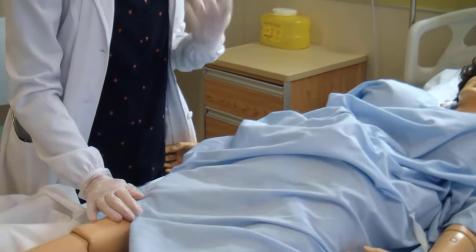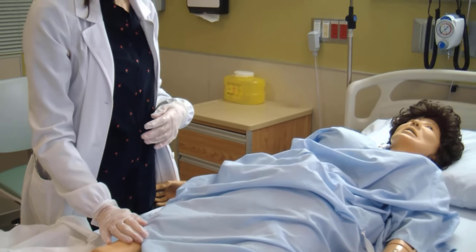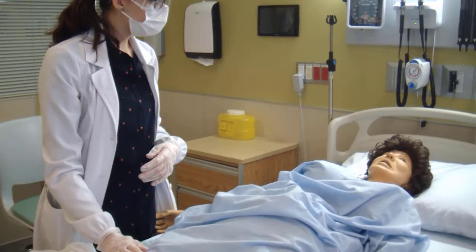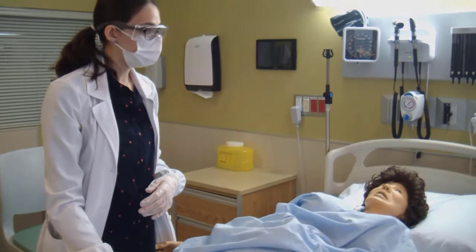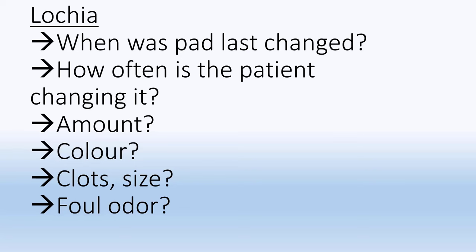I will also note or ask my patient if any blood clots were observed. Blood clots are normal, but we would be concerned if they were larger than the size of a golf ball. What looks like a large blood clot may actually be part of the placenta. If you are ever unsure, a good way to tell the difference is by rubbing the clot or running it under water — if it dissolves, then it is a clot; if it stays solid, then it may be placenta. It is important to educate your patient to look out for this as they will have lochia for quite a few weeks postpartum.